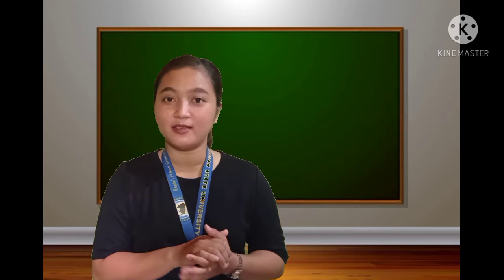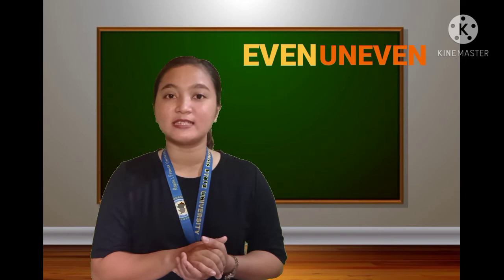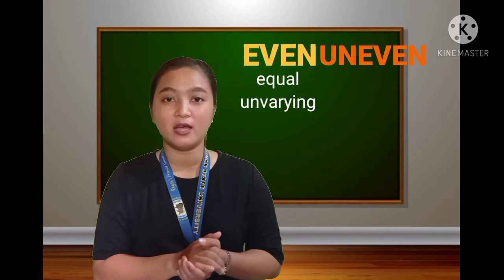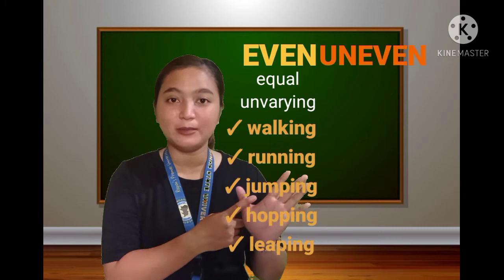Locomotor movements are categorized as either uneven or even movements, where even movements consist of movements that have equal and unvarying actions. An example of these are, we have walking, running, jumping, hopping, and leaping.